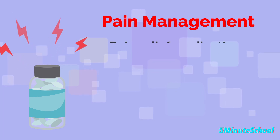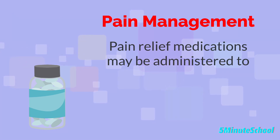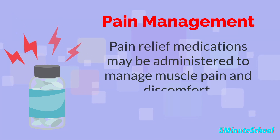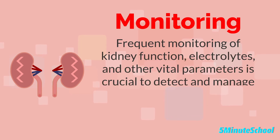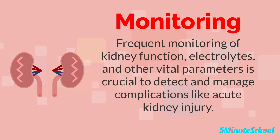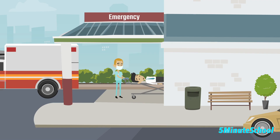Pain relief medications can be administered to help manage muscle pain and discomfort. Monitoring of kidney function, electrolytes, and other vital parameters is crucial to detect and manage complications like acute kidney injury. In severe cases, rhabdomyolysis can lead to life-threatening complications, so early diagnosis and treatment are essential for a favorable outcome. The approach to treatment is individualized based on the patient's specific condition and underlying causes.